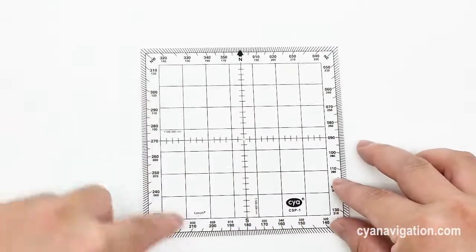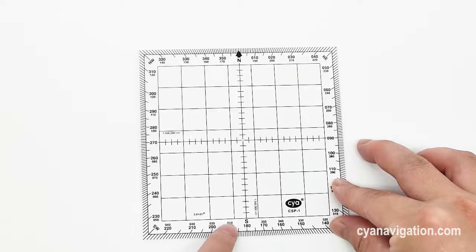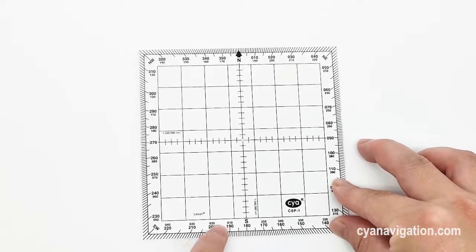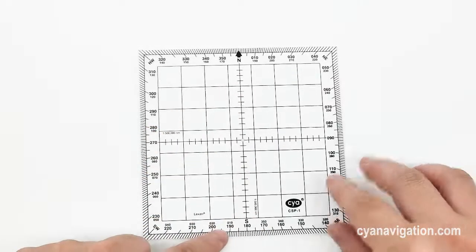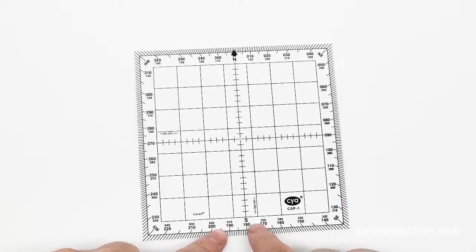And also for its inner scales, it also reads from here, 0, 10, so on up to 360.